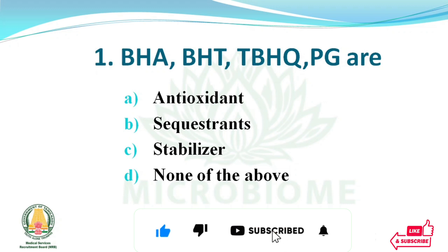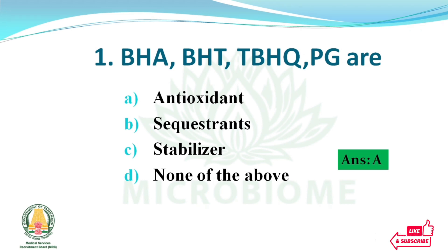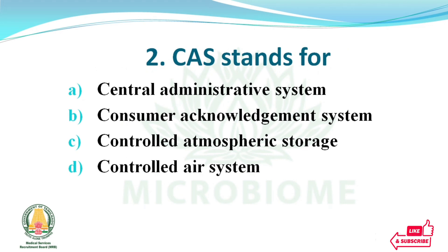BHA, BHT, TBHQ, PG — the options are antioxidant, sequestrants, stabilizer, none of the above. The right answer: option A, antioxidant. CAS stands for — options: central administrative system, consumer acknowledgement system, controlled atmospheric storage, controlled air system. The right answer: option C, controlled atmospheric storage.